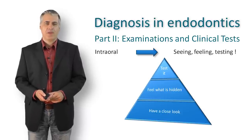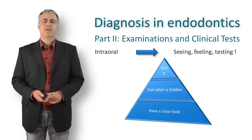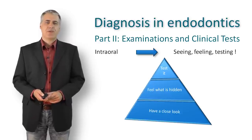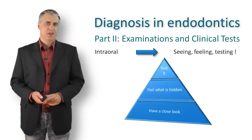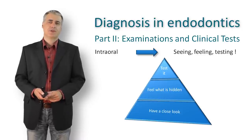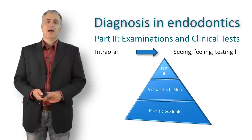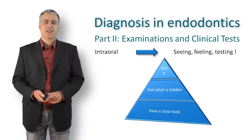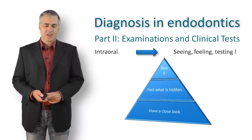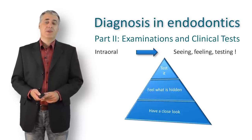Defective restorations or extensive carious lesions are suspicious, especially when the chief complaint is localized in the same region. Your finger explores the vestibular and palatal or lingual region in upper and lower jaws — swellings, whether firm or diffuse, are detectable in this way. All abnormalities such as ulcerations or unclear textures should be documented and referred when necessary.